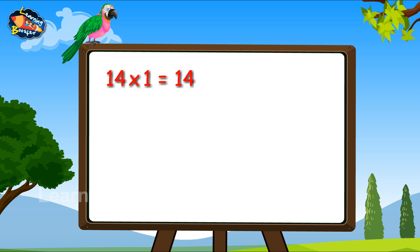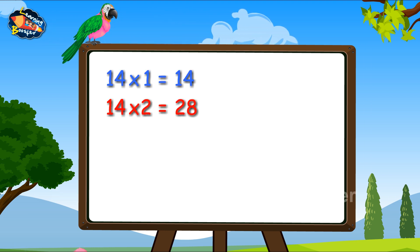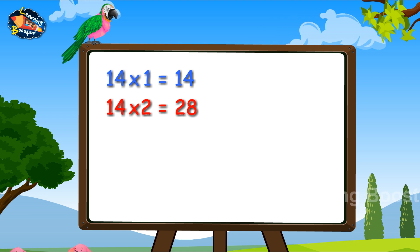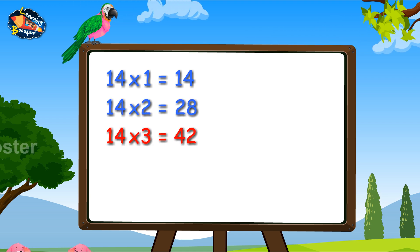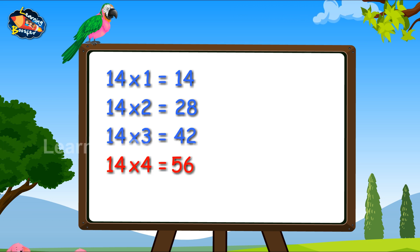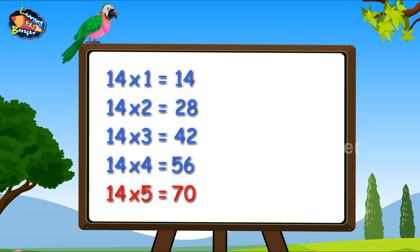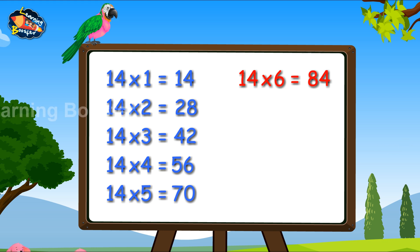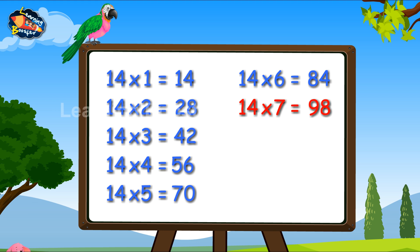14-1s are 14. 14-2s are 28. 14-3s are 42. 14-4s are 56. 14-5s are 70. 14-6s are 84. Fourteen sevens are ninety-eight.